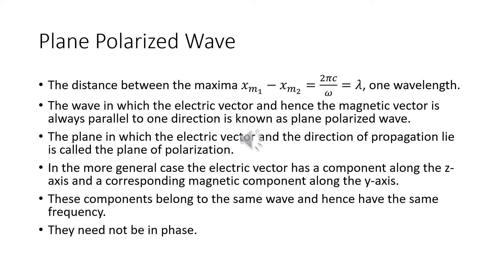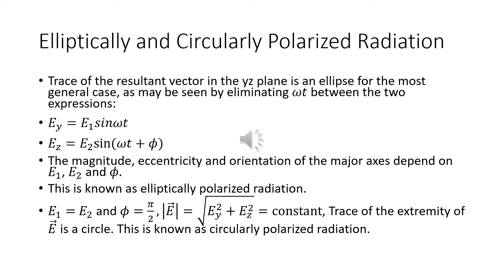A wave in which the electric vector and hence the magnetic vector is always parallel to one direction is known as a plane polarized wave. The plane in which the electric vector and direction of propagation lie is called the plane of polarization. In the more general case, the electric vector has a component along the z axis and a corresponding magnetic component along the y axis. These components have the same frequency and need not be in phase. The trace of the resultant vector in the yz plane is an ellipse. For the most general case, Ey = E₁ sin(ωt) and Ez = E₂ sin(ωt + φ).